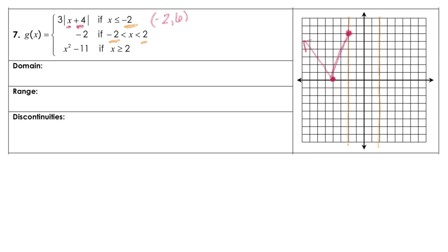Now let's look between the two borders. Notice we have y equals negative 2, and that's going to be between negative 2 and positive 2. So down here at negative 2 — notice we have an open circle on one side and an open circle on the other side too. That is just a horizontal line between the two.